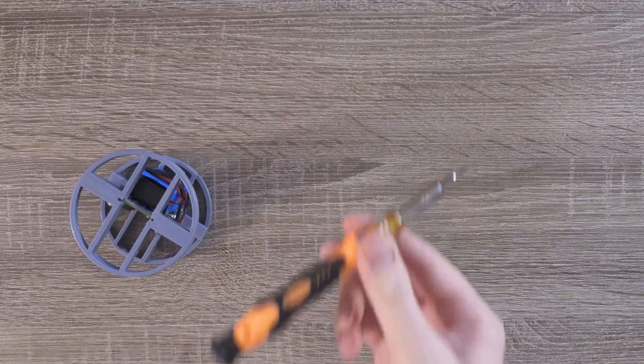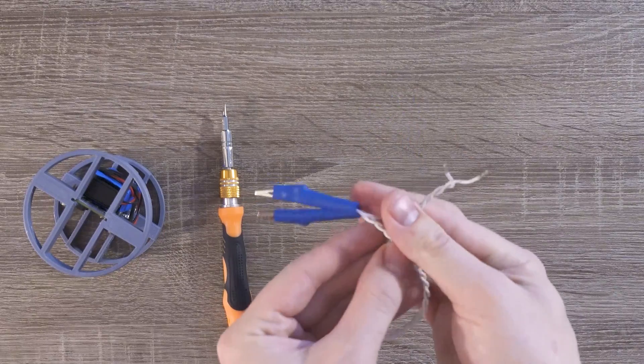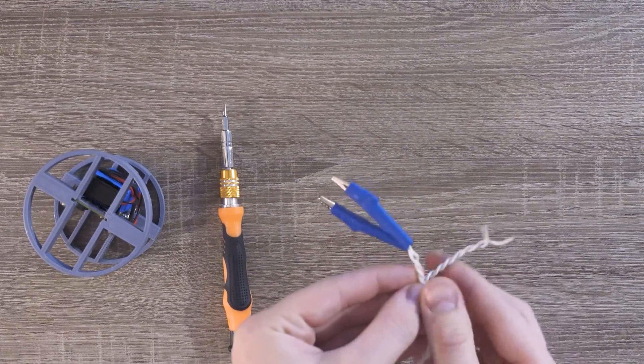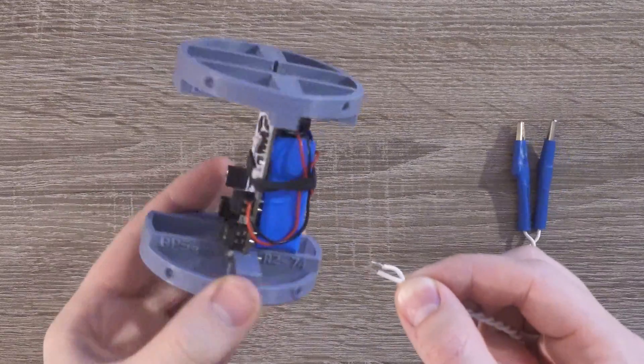Before we mount the flight computer into the rocket's airframe, we need to add something. This tiny cable connects the flight computer's pyrochannels to one of the actual charges. We'll connect this to pyrochannel 1, which is what will be used to deploy parachutes during flight.